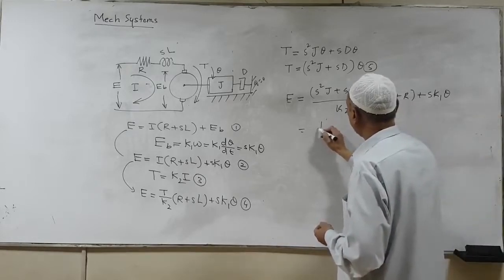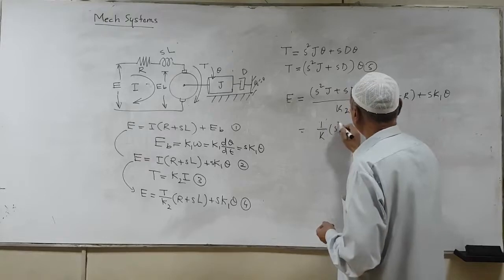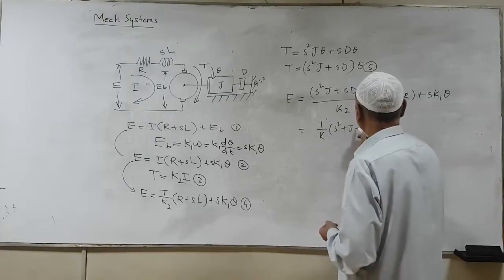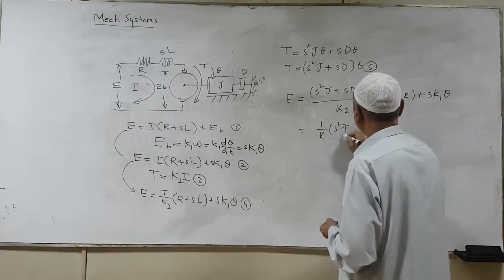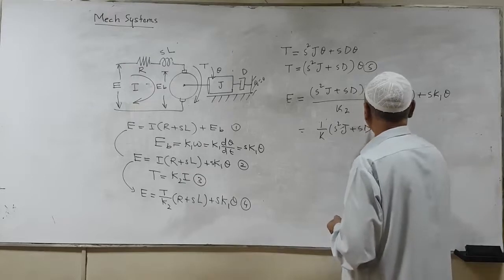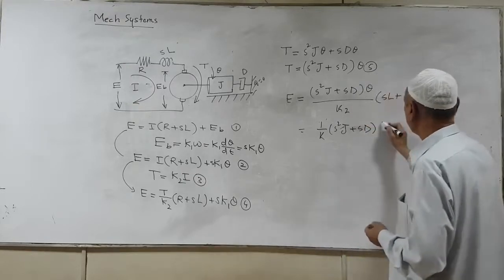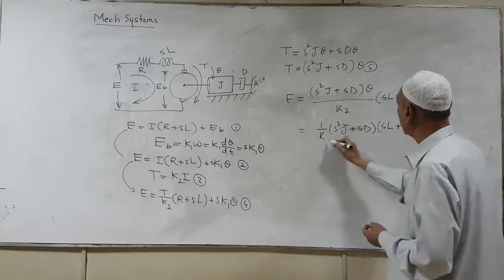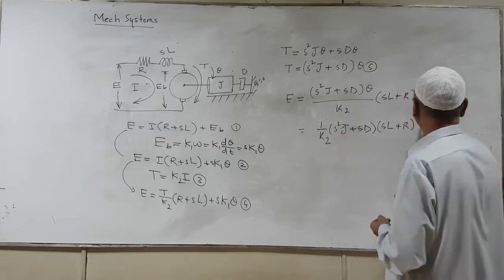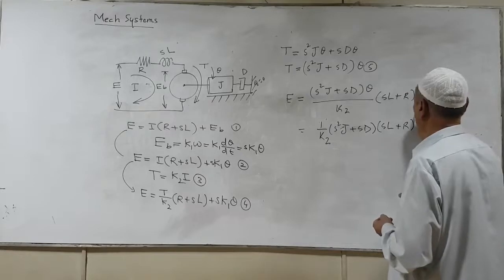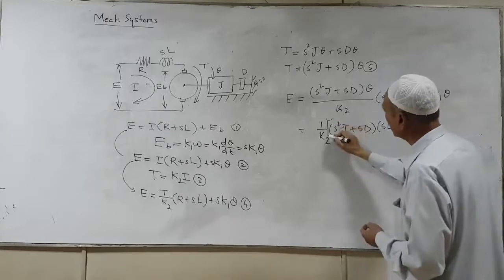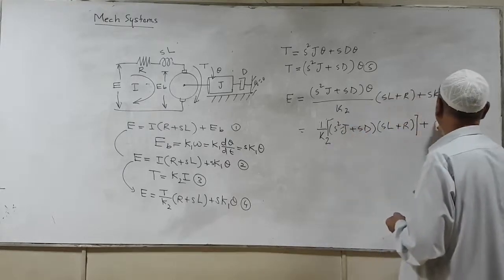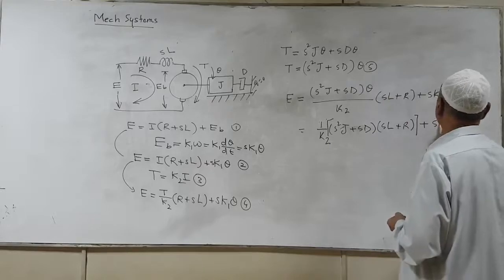Get things common and we have 1 over K2 S square J plus S D into SL plus R in a bracket term, plus S K1. Now, this is not the spring constant. This is the constant of proportionality and eventually what we have is theta.